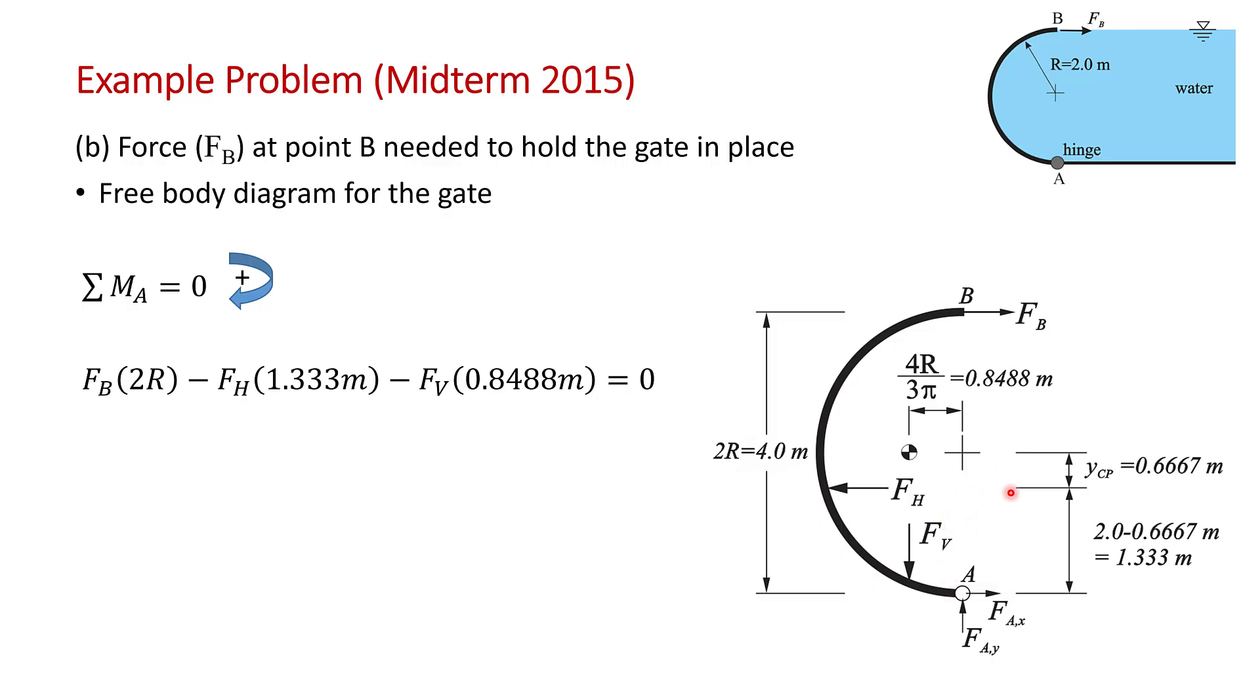This distance here is R. So this distance here is R minus YCP, which turns out to be 1.33 meters. And it's counterclockwise, so it's minus. And then FV acts at 0.8488 meters from the hinge in the horizontal direction. So there's the moment arm. And then it's just a matter of substituting in the forces that we have here.